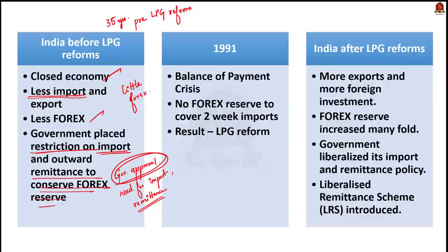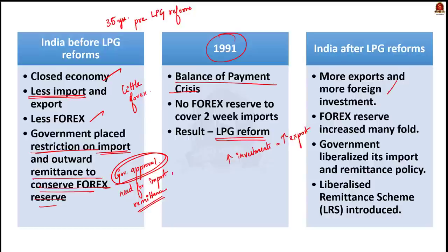In 1991, India's economy underwent a BOP crisis — that is, a balance of payments crisis — so we were forced to adopt the LPG reforms. Once the economy got liberalized, investment started flooding in and exports started increasing, resulting in a steep rise in forex reserves. So slowly, our country started removing restrictions placed on imports, foreign travel, and outward foreign remittance.